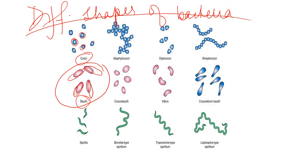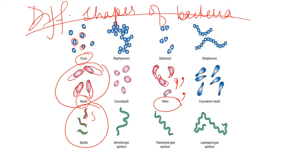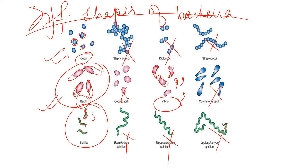Some bacteria are spiral in shape - you can see this is in the form of a spiral - called spirilla. And some are comma-shaped, like a comma, called vibrio. So remember these four shapes: cocci means round shape, bacillus means long and rod shape, spirilla means spiral shaped, and vibrio means comma shaped. These four shapes you have to remember.